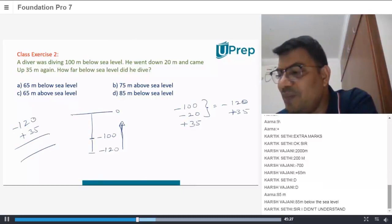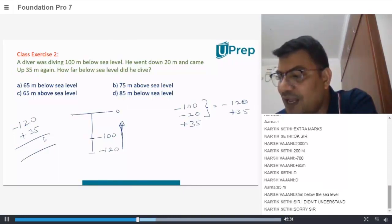What do you mean by 120 minus 35? 10 minus 5 will be how much? Minus 5, and you carry over 1 right. So basically you have 11 minus 3, 85.